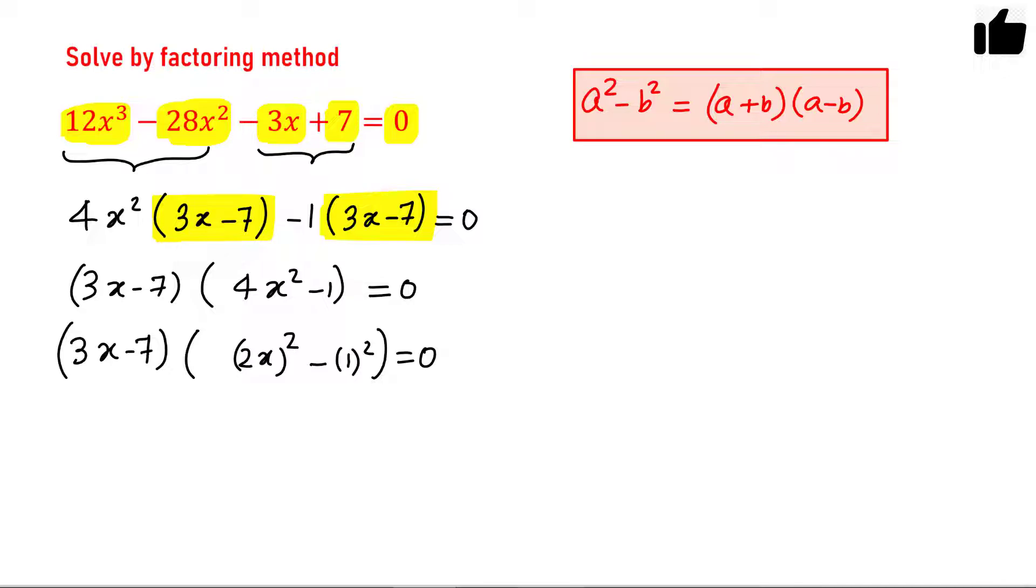If you use the formula then you will have (3x - 7)(2x - 1)(2x + 1) equals 0. Now there are 3 possibilities. Either you can have this equals 0, or this equals 0, or this equals 0.